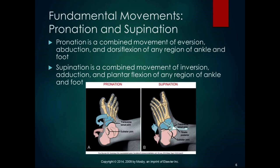Pronation and supination are combinations of those fundamental movements. Pronation is a combined movement of eversion, abduction, and dorsiflexion of any region of the ankle and foot — primarily at the subtalar joint and the transverse tarsal joint. Supination is a combined movement of inversion, adduction, and plantarflexion of any region of the ankle or foot.